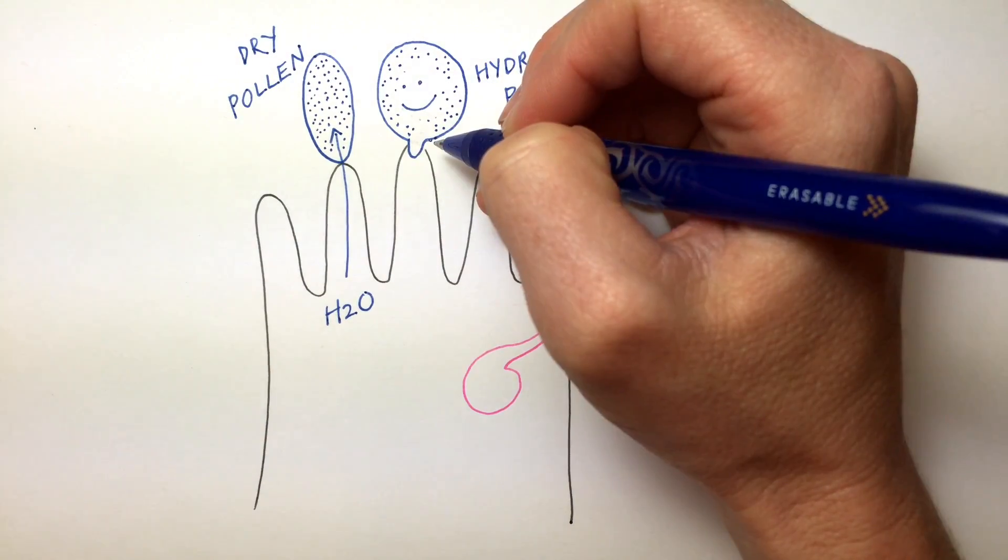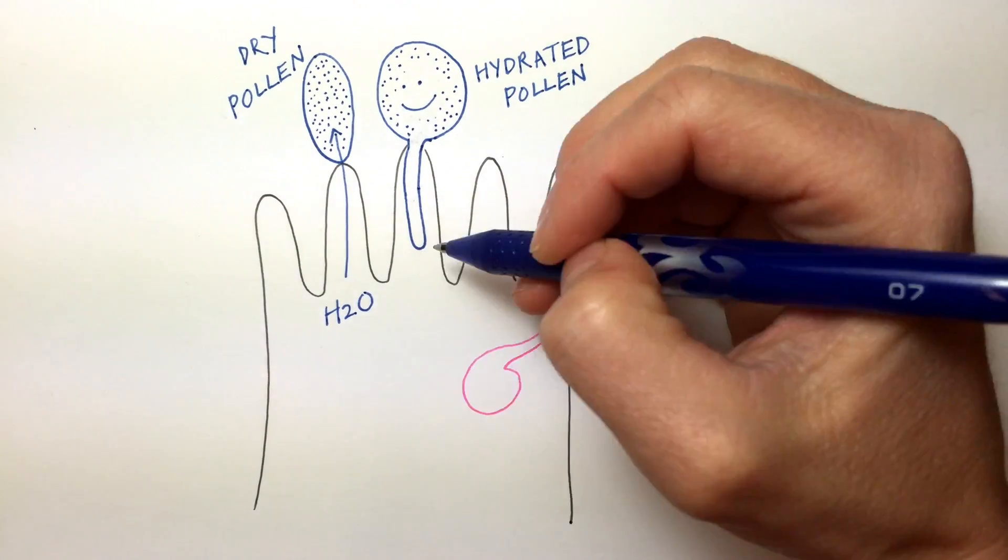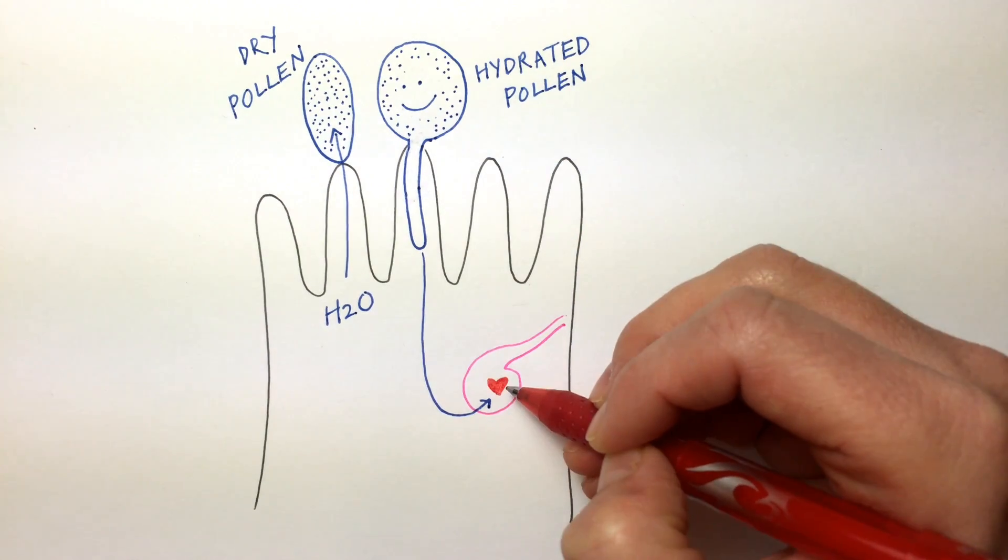Once back in action, the pollen creates a long pollen tube that grows a great distance to the ovule so it can fertilize it and create a seed.